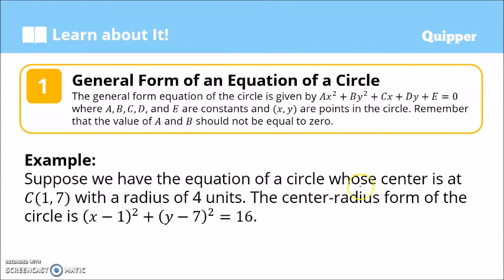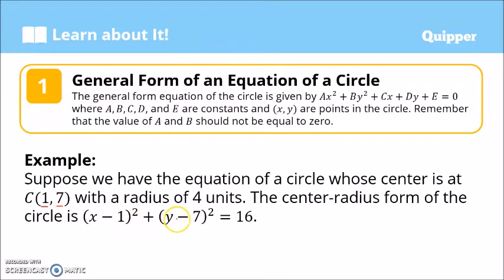For example, suppose we have the equation of a circle whose center is at (1, 7) with a radius of 4 units. The center-radius form of the circle is (x − 1)² + (y − 7)² = 16. This is because h is 1, so that's (x − 1)²; k is 7, so that's (y − 7)²; and the radius is 4, so 4 squared equals 16.